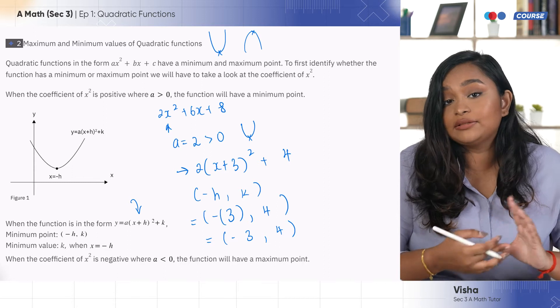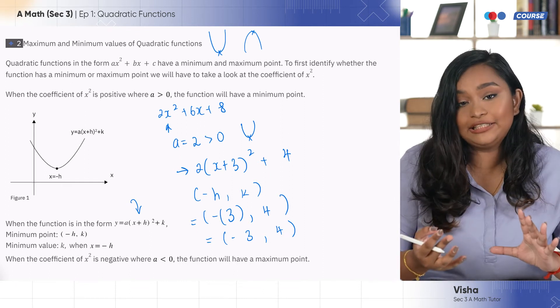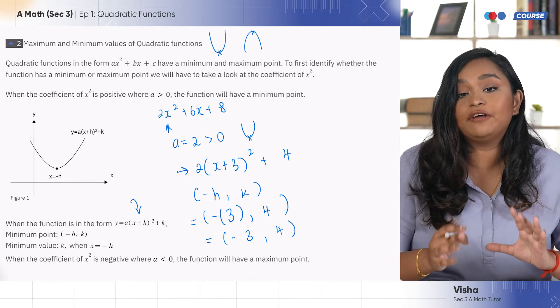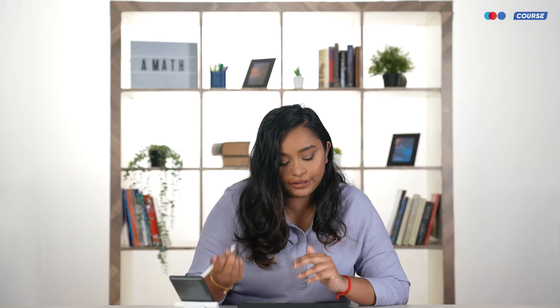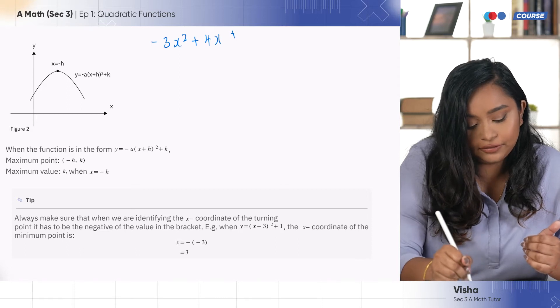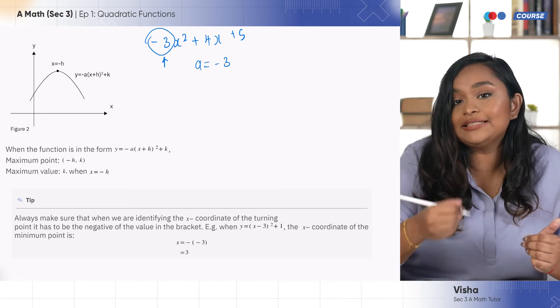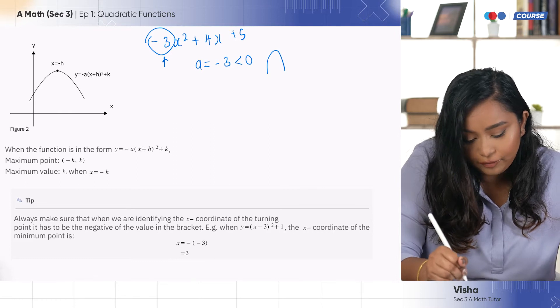When the coefficient of x² is negative — that means a < 0 — the function will have a maximum point. For example, −3x² + 4x + 5 has a = −3, which is less than zero. When you feel negative emotions, you will have a sad face. So when I have a sad face, I will have a maximum point. For these kinds of questions, you have to draw it out for yourself so you'll be able to identify whether it's a maximum or minimum point.